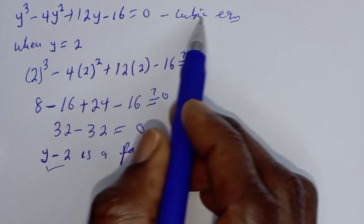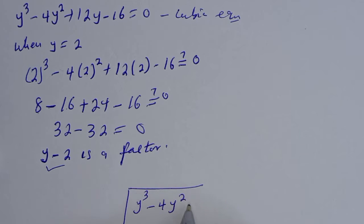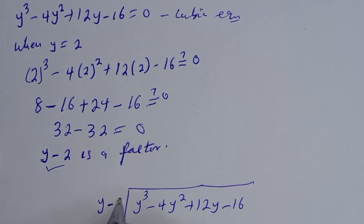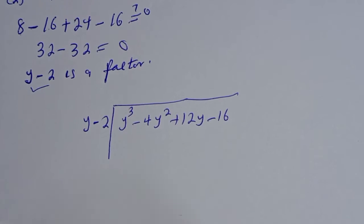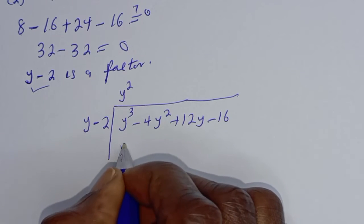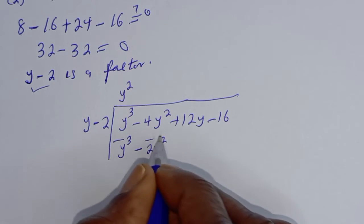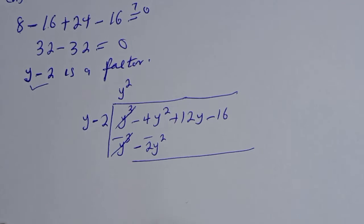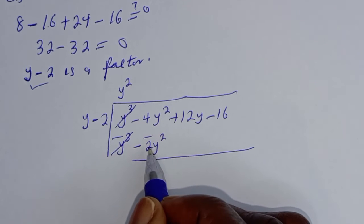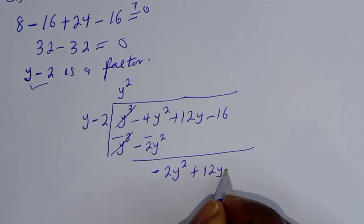Using long division, we divide y³ minus 4y² plus 12y minus 16 by (y minus 2). y² times y gives y³, y² times minus 2 gives minus 2y². Subtracting: minus 4y² plus 2y² gives minus 2y², bringing down to give minus 2y² plus 12y minus 16.